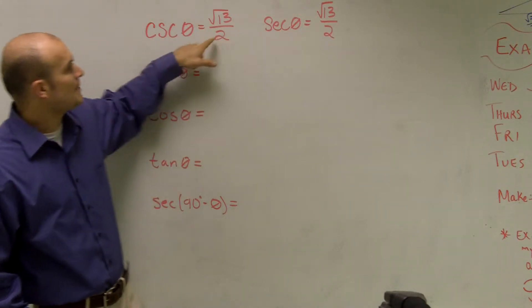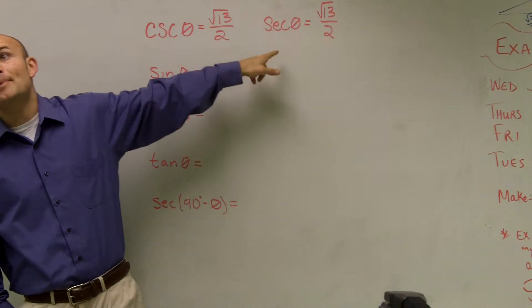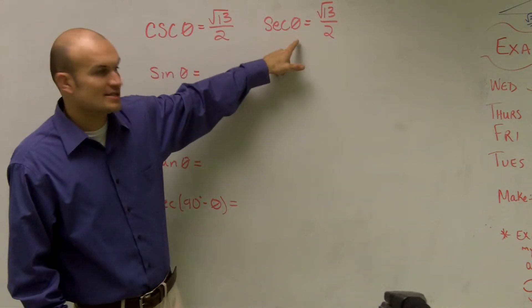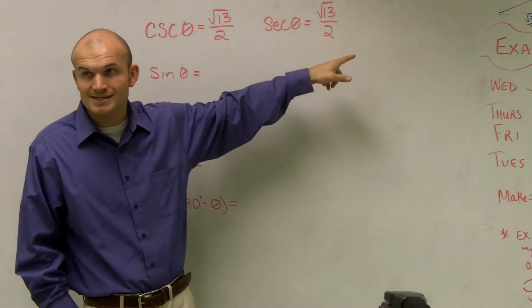And I'm sorry, our opposite side is 2. And secant is hypotenuse over your adjacent, and that is where 2 would be your adjacent side.